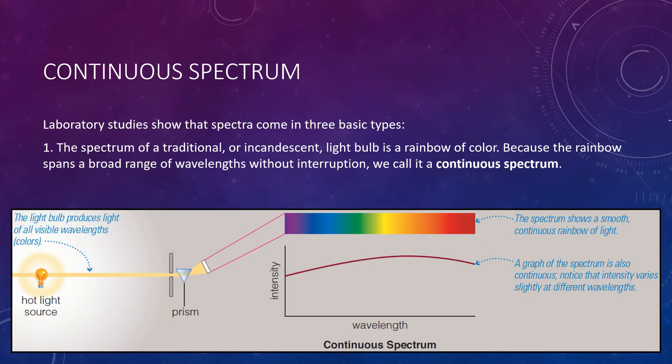Laboratory studies show that spectra come in three basic types. The first is the spectrum of a traditional incandescent light bulb, which contains a heated wire filament. It gives a rainbow of color spanning a broad range of wavelengths without interruption — we call it a continuous spectrum. If you pass light from a standard bulb through a prism, you get a rainbow of color, with intensity spread pretty evenly across all wavelengths. Because it's a full rainbow without any interruption, it's called a continuous spectrum.